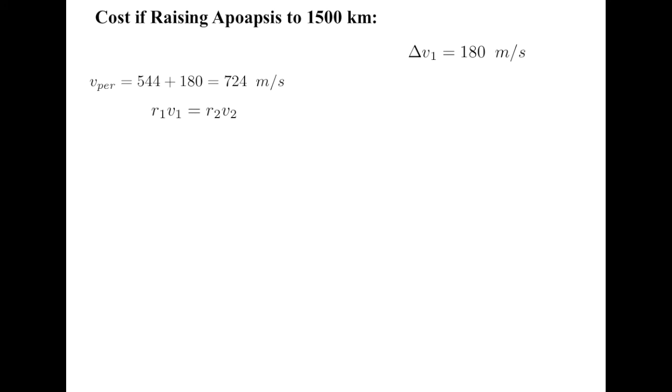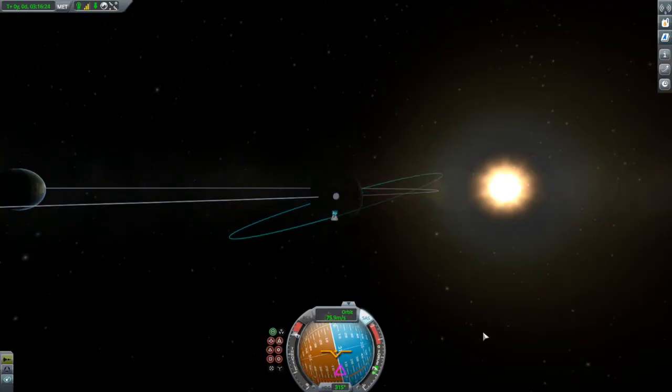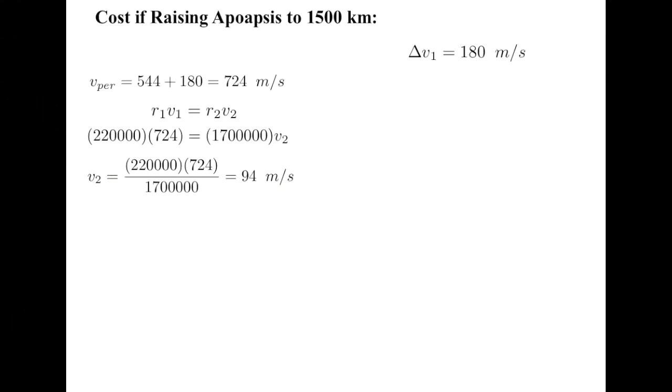We'll let R1 and V1 be the radius and velocity at periapsis and R2 be the radius at apoapsis. Substituting in and a little rearranging gets a velocity at apoapsis of 94 meters per second. Armed with this, we can now calculate the cost of the 90 degree inclination change. Substituting in and calculating gets only 133 meters per second.